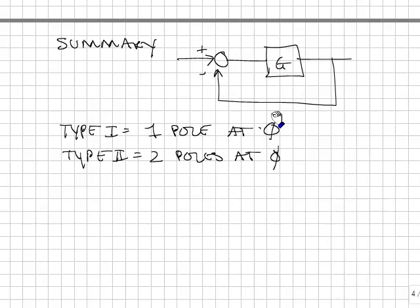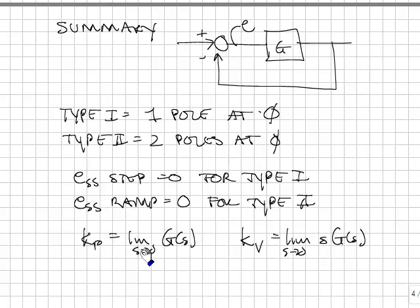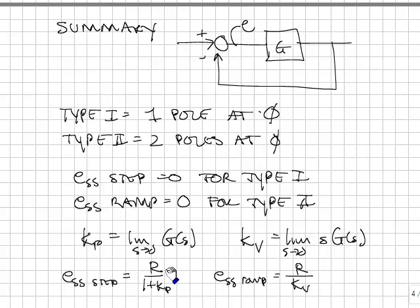Quick summary: given a unity feedback system where G(s) includes the plant and compensator combined, the system is Type 1 if G has one pole at 0, and Type 2 if it has two poles at 0. The steady-state error to a step input is 0 for a Type 1 system; the steady-state error to a ramp input is 0 for a Type 2 system. The step error constant is kp = lim(s→0) G(s), and the ramp error constant is kv = lim(s→0) s·G(s). The steady-state error to a step is r/(1 + kp), and to a ramp is r/kv.